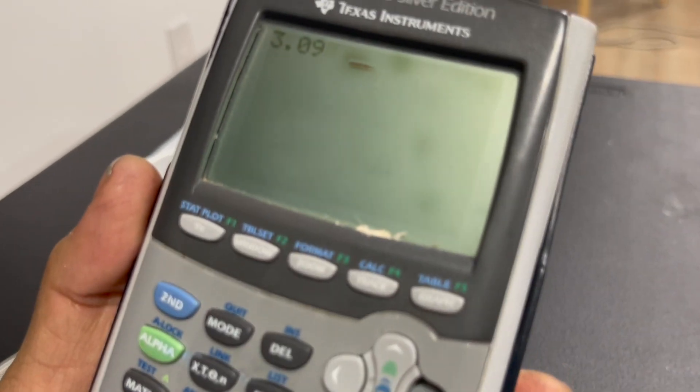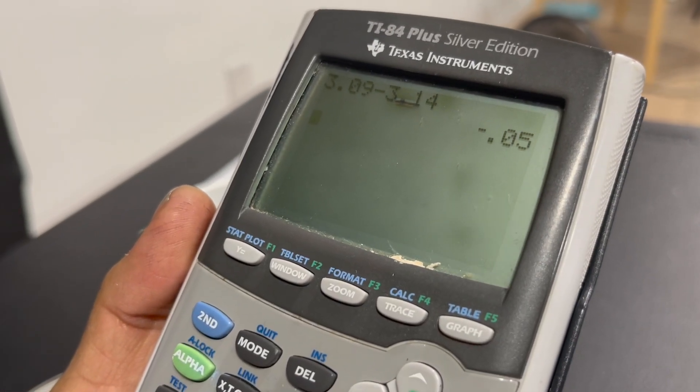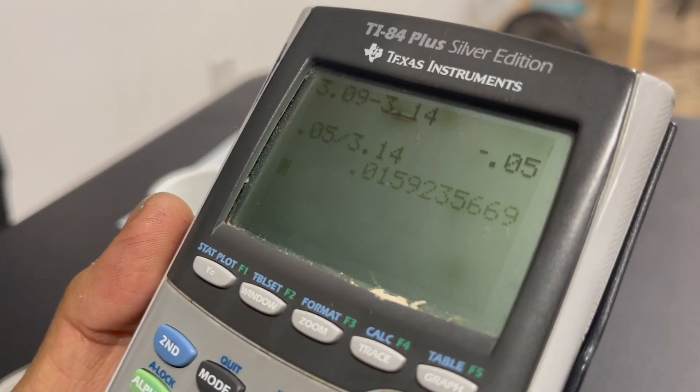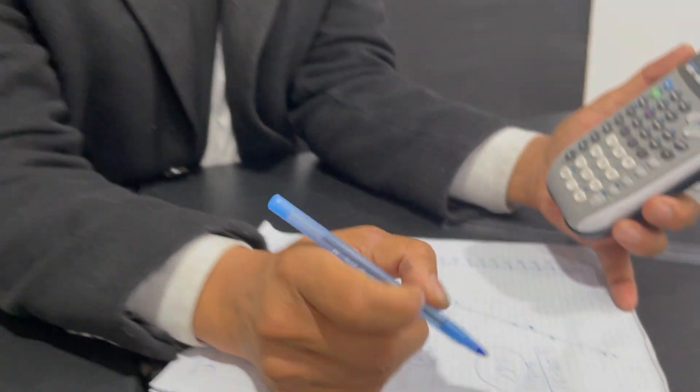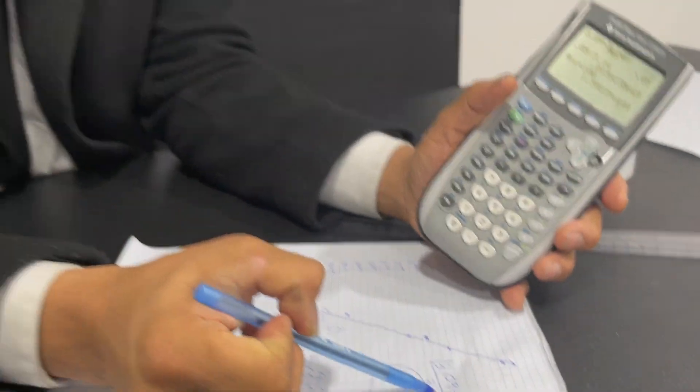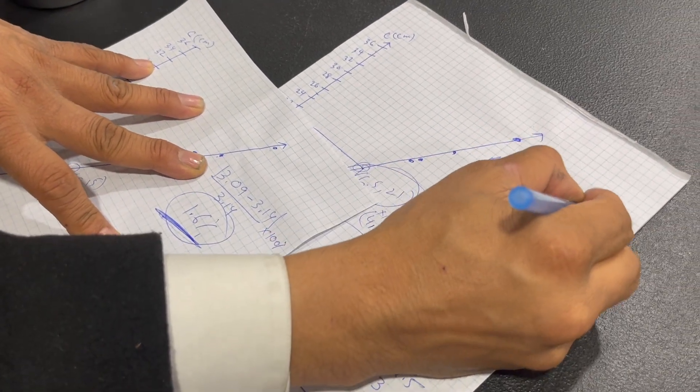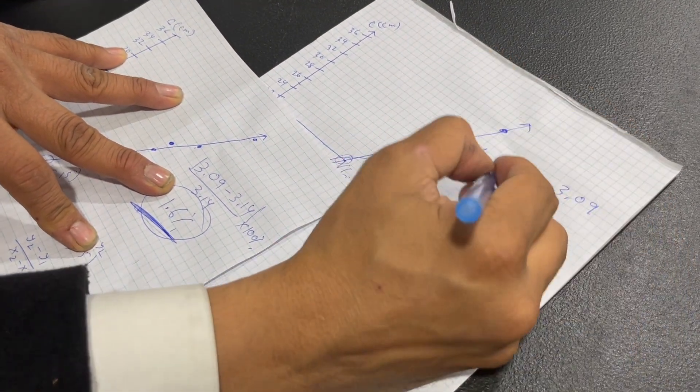So this is 3.09. 3.09 minus 3.14, which is 0.05. Divide by 3.14, which is times 100. And that is 1.6, 1.6 percent error. So the regression give us a better result than best-fit line. Regression gave us 3.09. And the best-fit line give us 3.2.